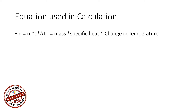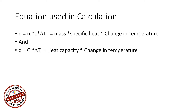Two equations are used in the calculation. The first is Q equals m times c times delta T, where m is mass, c is specific heat, and delta T is change in temperature. The second is Q equals uppercase C times delta T, or heat capacity times change in temperature.